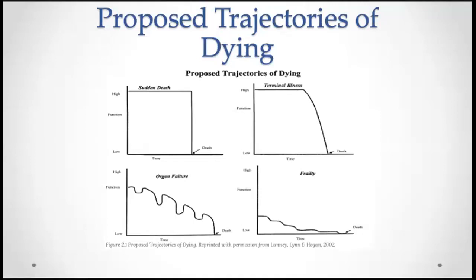People with organ failure can appear to have a sudden death, which can happen at any time during an acute episode. This may also be when the resident is admitted to your facility, when they are no longer able to manage independently at home. The final trajectory is frailty, typically seen in people with dementia or the frail aged, characterised by a prolonged gradual decline.